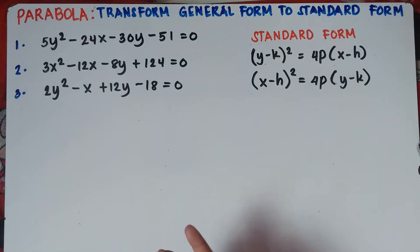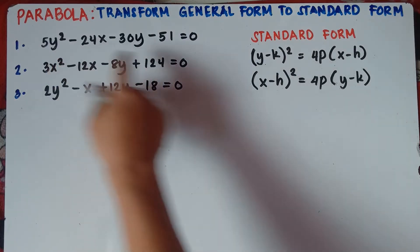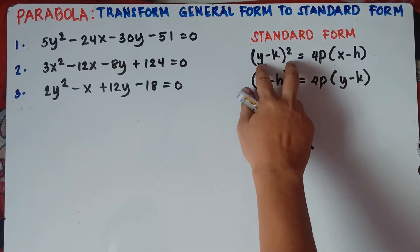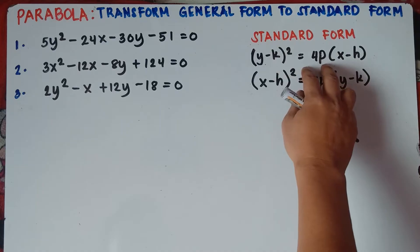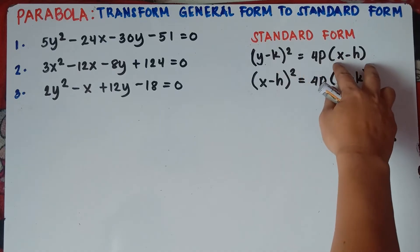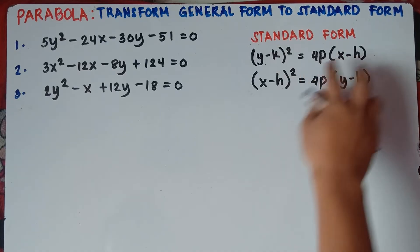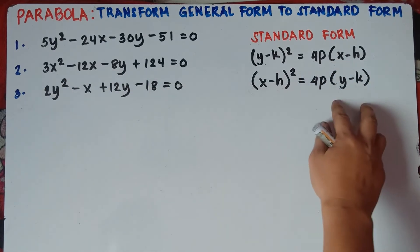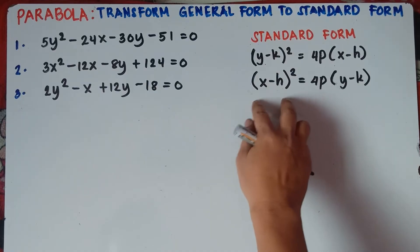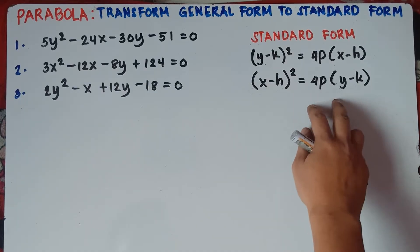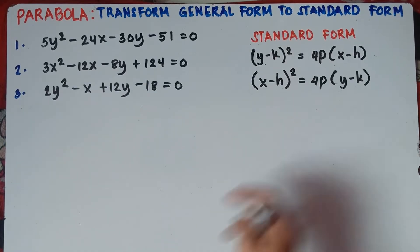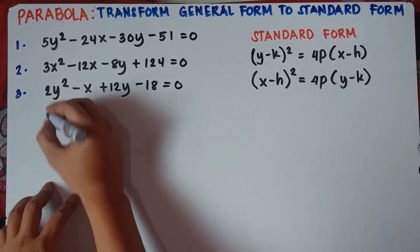So what will we do? Once again, if you have y squared, this will be your equation: quantity y minus k squared equals 4p quantity x minus h. If you have x squared, this will be your equation: quantity x minus h squared equals 4p quantity y minus k. So let's answer number 1, class.